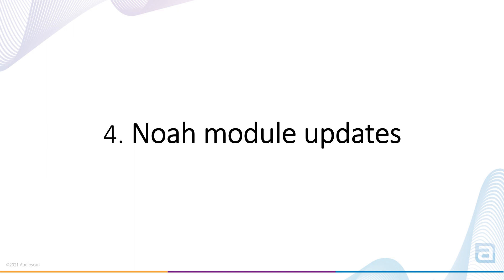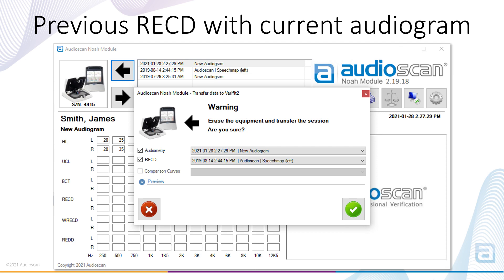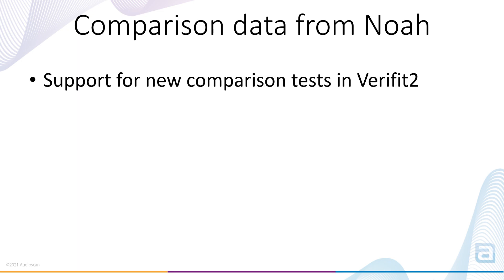NOAA module updates. The first NOAA module update is the ability to pair a previously measured RECD with a current audiogram. While it is typical to have a newly measured RECD whenever a new audiogram has been stored, in some cases the audiogram may have changed but a previous RECD is still appropriate — for example, when using individual RECDs measured on adult ears. As shown here, the window which pops up when sending data from NOAA to the Verifit has changed. The first selector shows the assessment data action which will be sent over, defaulting to the most recent audiogram, and the selector below allows the clinician to select a stored RECD which may have an earlier date.